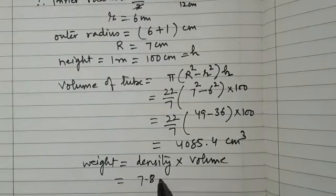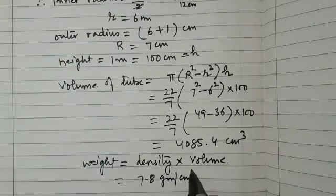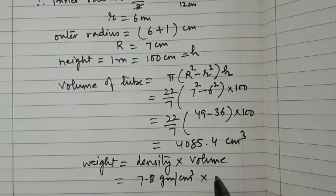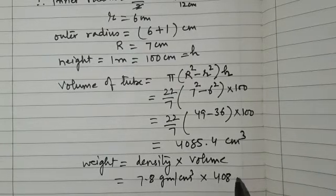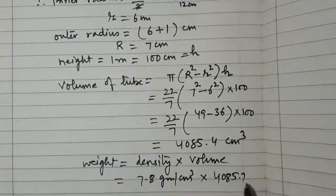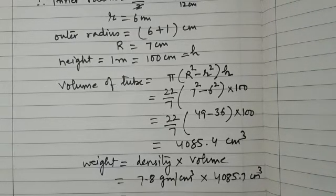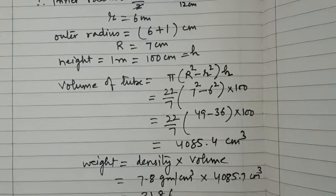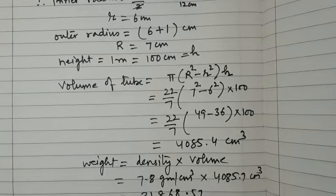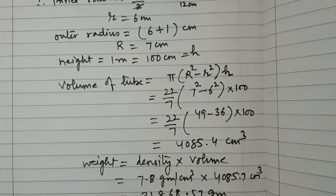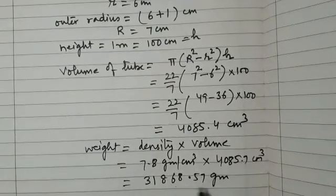And volume we have calculated, that is 4085.7 cubic centimeter. Simplify this and we get the answer as 31868.57 grams. Now we can convert this into kilograms.